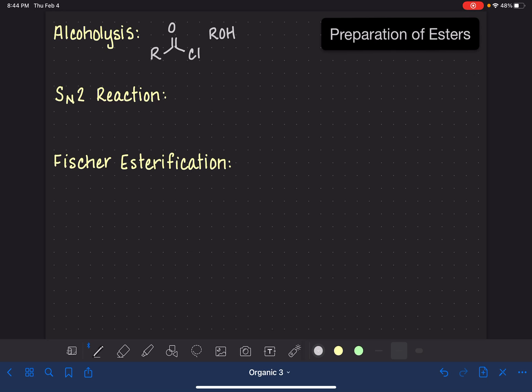Using an acid chloride and an alcohol, we replace the chloride with an OR group, which converts this to an ester. If you recall from the reactions of acid chlorides, this reaction needs to be done in pyridine solvent. The abbreviation for pyridine is PY.